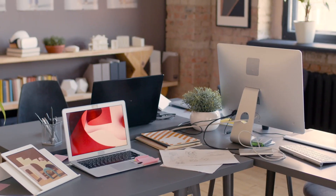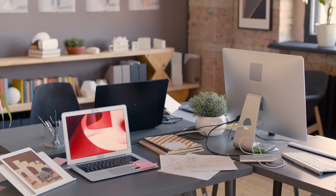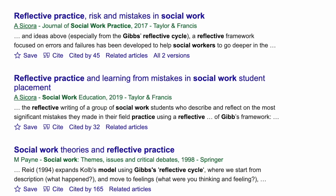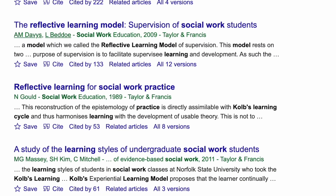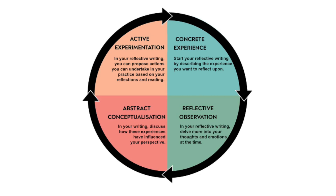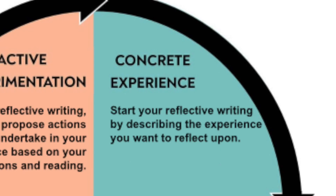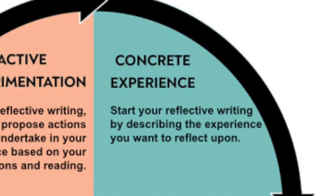Now let's discuss technique number two: using a structured approach. As a social work student, you can benefit from using models like Gibbs' reflective model, or as in this example, Kolb's experiential learning cycle, to structure your work. Kolb outlines four stages — you can use each one to structure your writing. For example, you can use the concrete experience stage to start your reflective writing by describing the experience you want to reflect upon. This could be a challenging case or a client interaction. In the concrete experience stage, you want to lay out the facts and your initial thoughts or feelings about the experience.